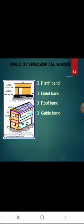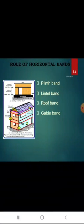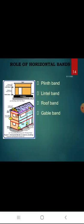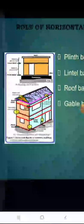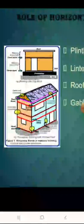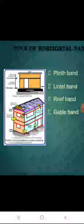Role of horizontal bands — plinth band, lintel band, roof band, and gable band: the plinth band should be provided where the soil is soft or uneven, as usually happens in hilly areas. The lintel band is the most important band, covering all door and window lintels. In buildings with flat reinforced concrete or reinforced brick roofs, the roof band is not required as the roof slab acts as a band. In CGI sheet or sloped roof buildings, the roof band is essential. The gable band is used only in buildings with pitched or sloped roofs. In the diagram, gable bands are shown in purple and the roof band in pink.